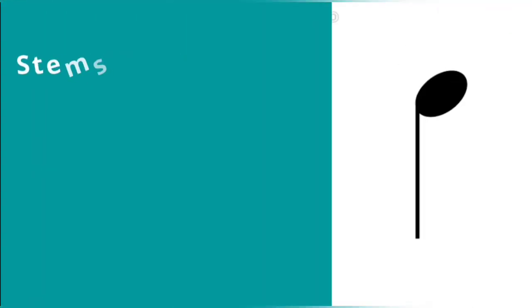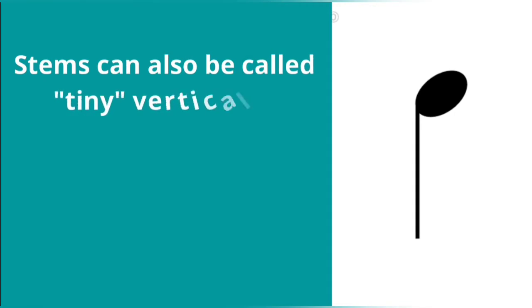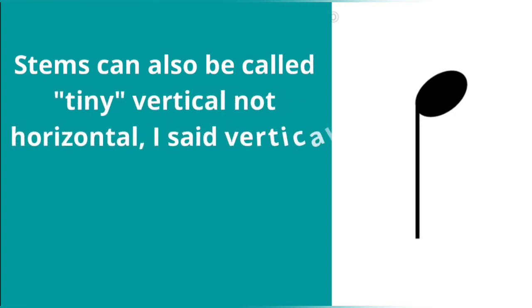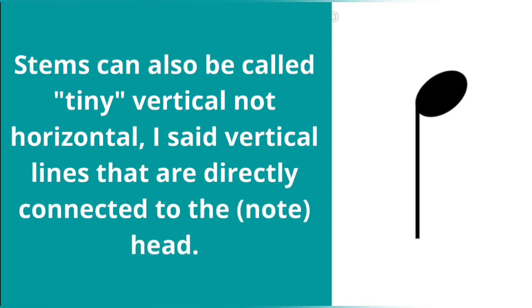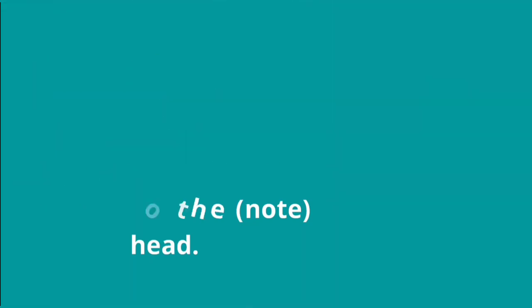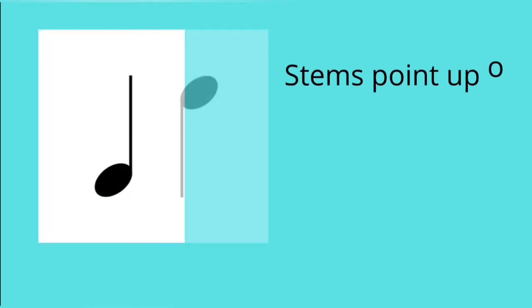Stems can also be called tiny vertical, not horizontal, I said vertical lines that are directly connected to the note head, whether it is facing upward or downward. A simple definition is stems are vertical lines that are tiny or thin. Either one you make use of is correct.